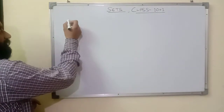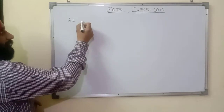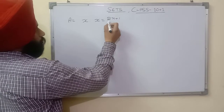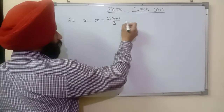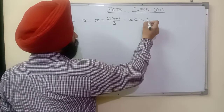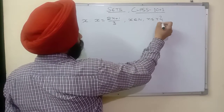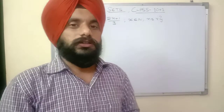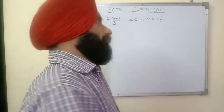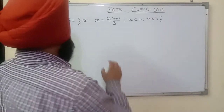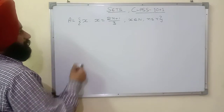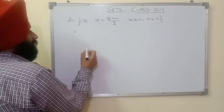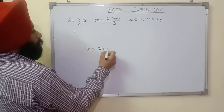Let us take an example. Consider set A given in the set builder form: A = {x | x = (2n + 1)/3, where n belongs to natural numbers and n is less than or equal to 4}. This set is given in the set builder form and we have to convert it into roster form. The elements of this set will be represented by x.